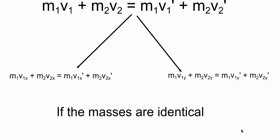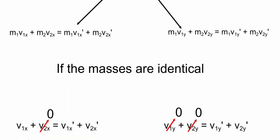Now, since the masses are identical, we can actually just cancel them all out, and now we're simply left with v1x plus v2x equals v1x' plus v2x'. Ball two is actually not initially moving, so we can call that a zero.